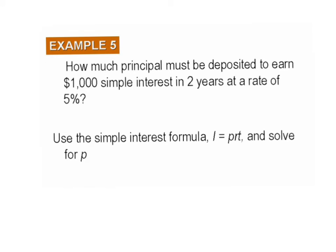Here's example five, on page 134 of our text. How much principal must be deposited to earn $1,000 simple interest in two years at a rate of 5%? We use I equals PRT, except we have to change this around. We know I equals PRT, but it wants to know what P is. So if we divide both sides by RT, this cancels out, and what we get is P equals I divided by RT.